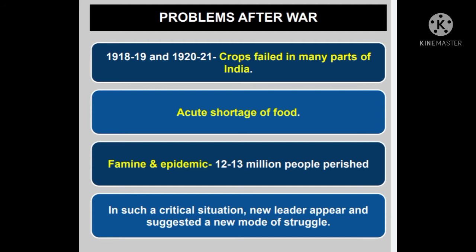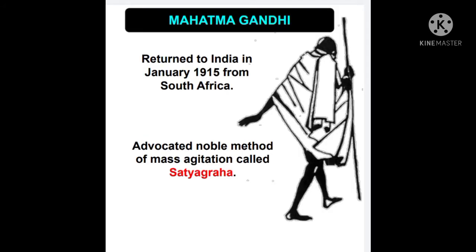Par aisa kuch nahi hua — Britishers ka attyachar aur oppression Bharat mein aur zyada badh gaya. Isi dauran, in January 1915, Mahatma Gandhi returned to India from South Africa. As you know, he had come from South Africa where he had successfully fought the racist regime with a noble method of mass agitation which he called Satyagraha. Unhone wahan kali-gore ka jo bhedbhav tha, usse mitane ke liye ek bahut bada andolan shuru kiya — the Satyagraha movement.